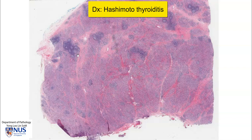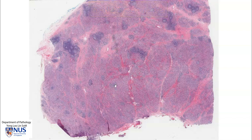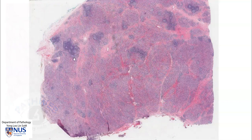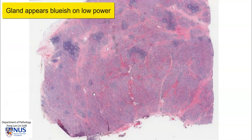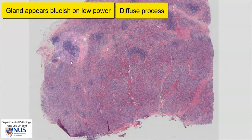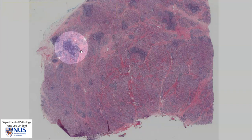Microscopically, we can see that the whole gland looks very abnormal. Instead of seeing the usual thyroid follicles filled with pink colloid, the gland actually looks a lot bluer on low magnification, and this is quite a diffuse process. We can also notice some very interesting looking areas which I will zoom into later.